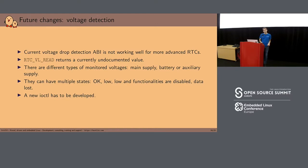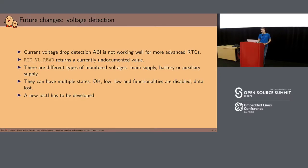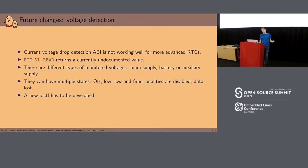My idea is to have a new ioctl to manage that. I'm still deciding on the exact structure to pass, because I want to be flexible enough to support all RTCs that monitor multiple voltages — I found an RTC that had three different voltages it can monitor.